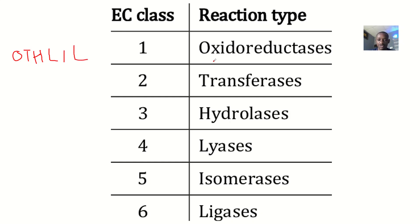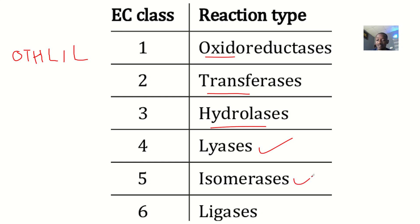So O is what? Oxidoreductase. T is what? Transferase. H is what? Hydrolase. L is what? Lyase — that's the first L. I is what? Isomerase. The last L is what? Ligase. So if you just arrange them like that, it's quite simple.